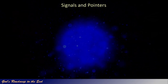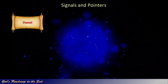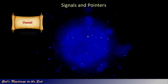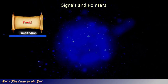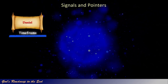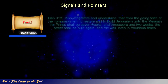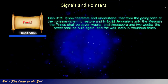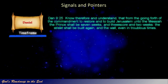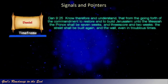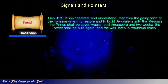Firstly, Gabriel gave Daniel a specific time frame for Israel to be in a position to know the exact date on which they should expect their Messiah. This timing is given in Daniel 9:25, and is linked to another prophecy given in Zechariah 9, where a more detailed description of Israel's Messiah's introduction to the nation is given.